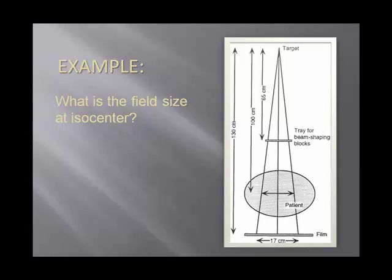It's not a difficult problem if you ask yourself at the beginning: if I know my image on film is 17 and they're asking what it is at isocenter, I know it's going to be smaller at isocenter. So right away when you look at the answers on a test, you say 'I know it's going to be smaller than 17,' and cross out anything larger than 17 — so you don't accidentally pick the wrong answer if you solve the equation incorrectly.